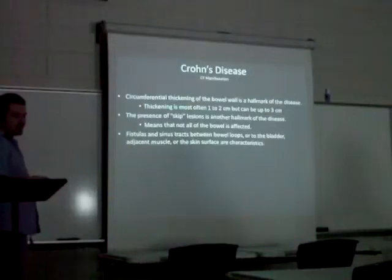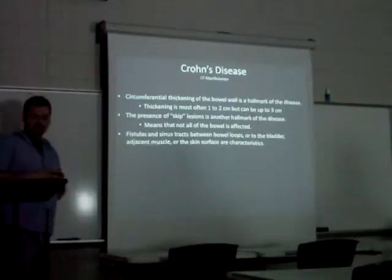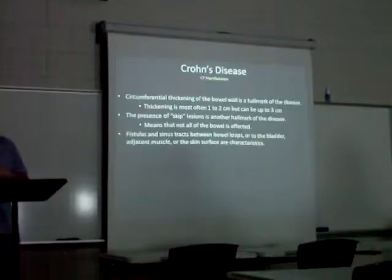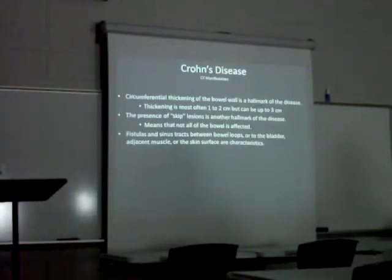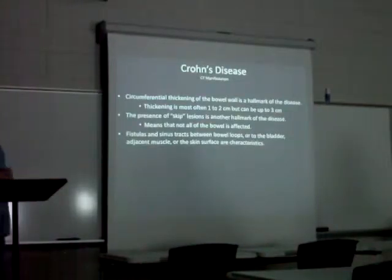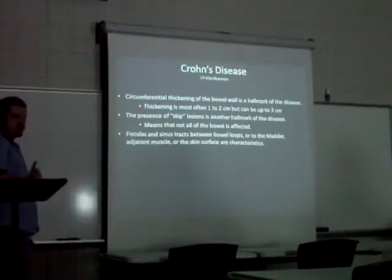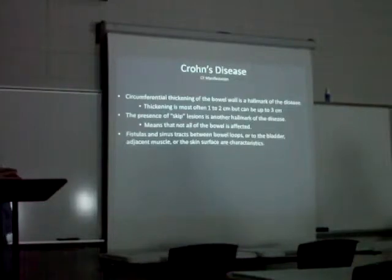On CT, Crohn's disease demonstrates circumferential thickening of the bowel wall, most often 1 to 2 centimeters and up to 3 centimeters. The presence of skip lesions is a very important finding that helps distinguish Crohn's from colitis. Fistulas and sinus tracts between bowel loops, or to the bladder, adjacent muscle, or skin surface are also characteristic of Crohn's disease.